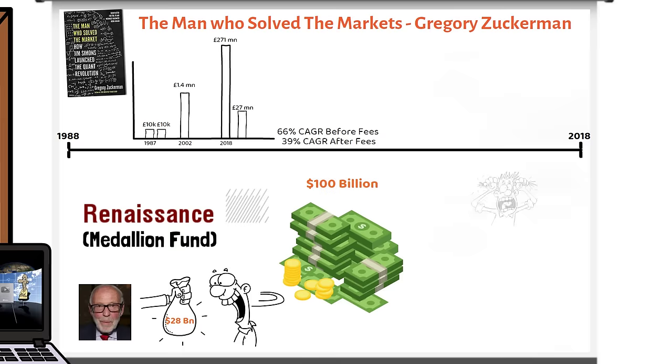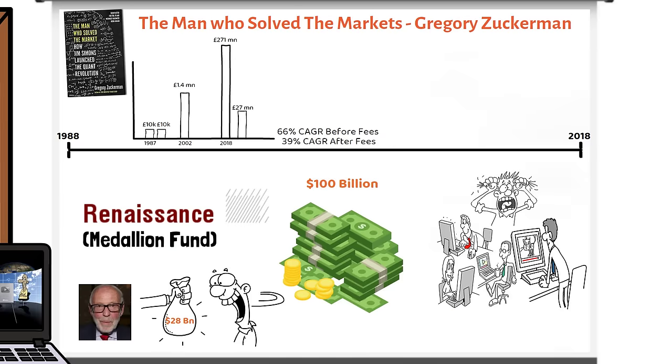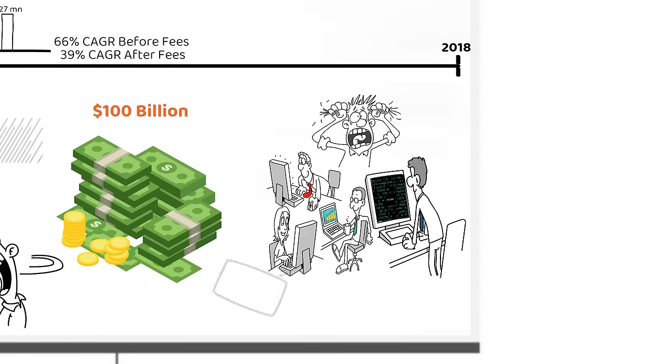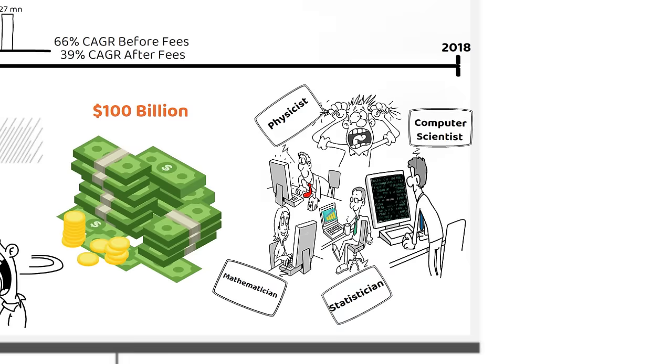The craziest part of this story is that Jim and his team had no background in trading or investing. Instead, they were a set of mathematicians, physicists, statisticians and computer scientists bunched together to literally solve the markets.